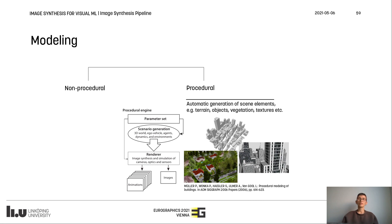In cases like this, even though some geometry is shared between all scenes that use it, large variability can be achieved by varying properties such as placement, orientation, textures, and simulated materials. On the contrary, non-procedural modeling relies mostly on manual efforts and artistic work, and does not involve any automatic generation procedures.